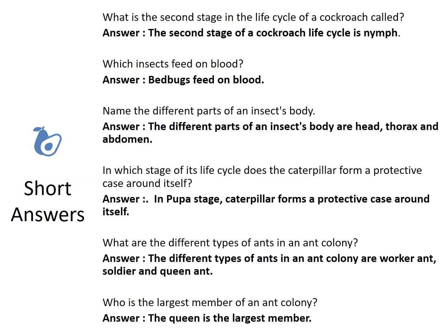Which insects feed on blood? Bedbugs feed on blood. Name the different parts of an insect's body: head, thorax, and abdomen. In which stage of its life cycle does the caterpillar form a protective case around itself? In the pupa stage.